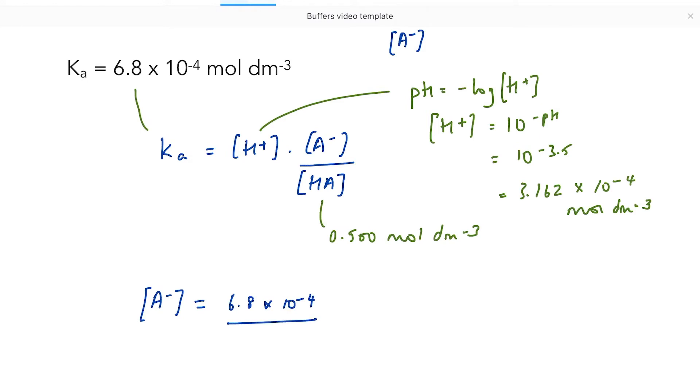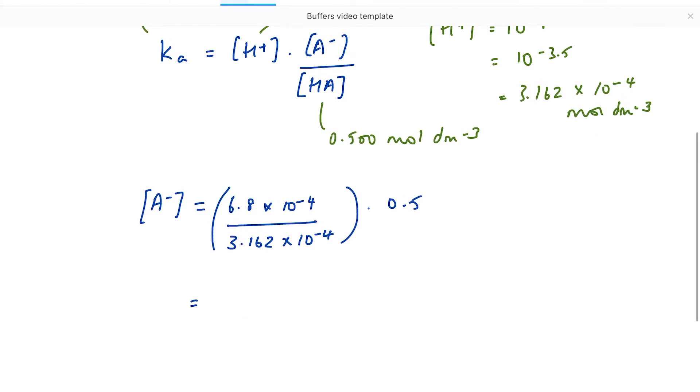multiply by HA by 0.5. Plug that into your calculator and it comes out at 1.08 mol per decimetre cubed.